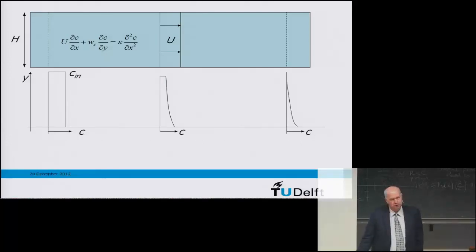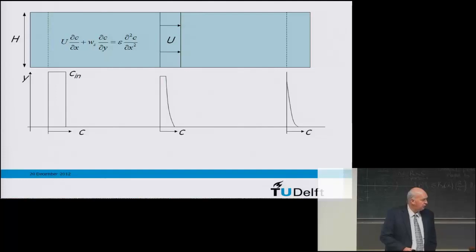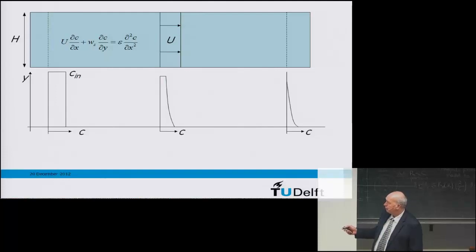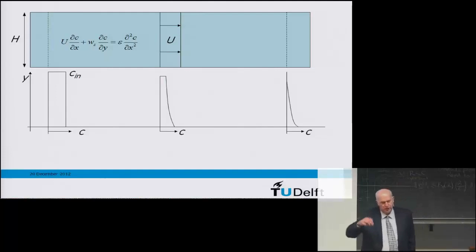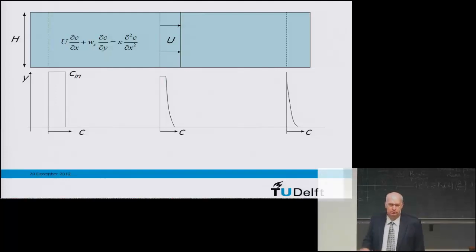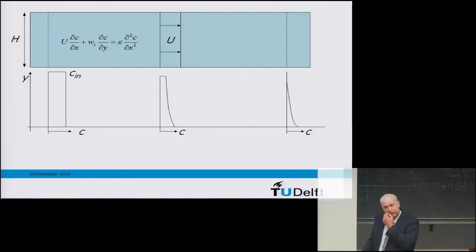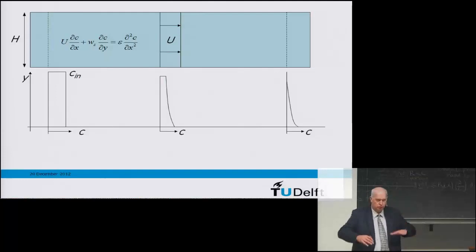When we solve the equation, we see that starting with a homogeneous concentration over the height at the inlet cross-section and transporting particles to the right, due to settling the total concentration decreases downstream — particles are removed from the flow and settling in the bed. At the same time, there will be fewer particles near the water surface and more near the bed, due to settling.